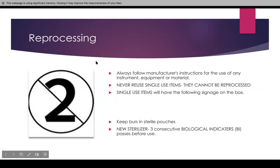For reprocessing, we always have to follow the manufacturer instructions for use (MIFU) for any instrument, equipment, or material. Sometimes our instruments and equipment come with a manufacturer instruction booklet. If we do not find it or happen to lose it, we can always Google the brand or name and write MIFU, and then you will have it for that instrument or equipment.